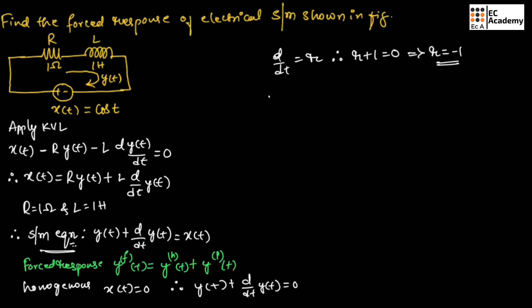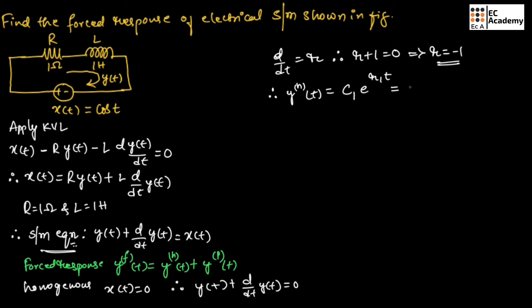Therefore, yh(t) can be written as c1·e^(r1·t) since r is real. If we substitute the value of r, we will get c1·e^(-t). Now we have found yh(t).